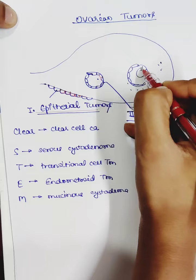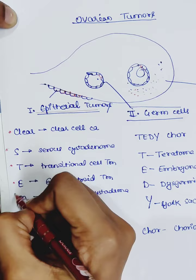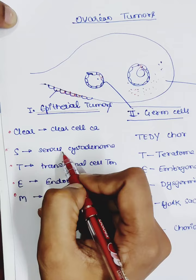So the first group arise from surface epithelium. The epithelial tumors have five subgroups. Clear stem. Clear for clear cell carcinoma. S for serous cystadenoma. These are the most common tumors among epithelial tumors.